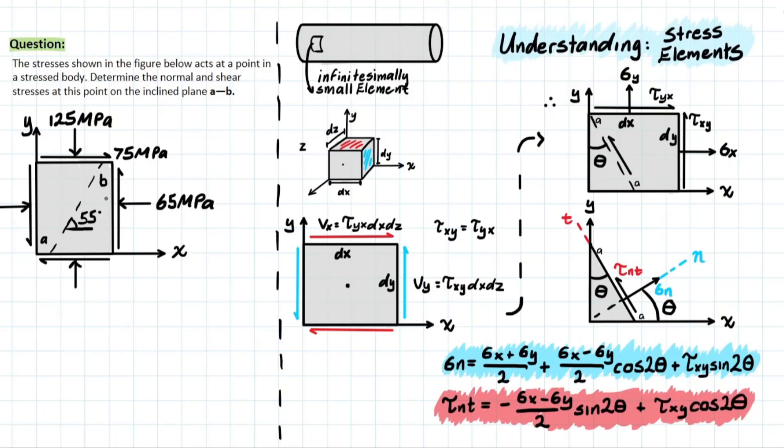To explain what a stress element is, we're going to be looking at this question here. The question goes as follows: The stressors shown in the figure below act at a point in a stressed body. So let's consider a rod in the theory to try and explain what that means. We're asked to determine the normal and shear stress at this point on the incline plane AB. So not only are we looking at a stress element, we're looking at a section of that element to see what type of shear stress and normal stress are developed on that face.